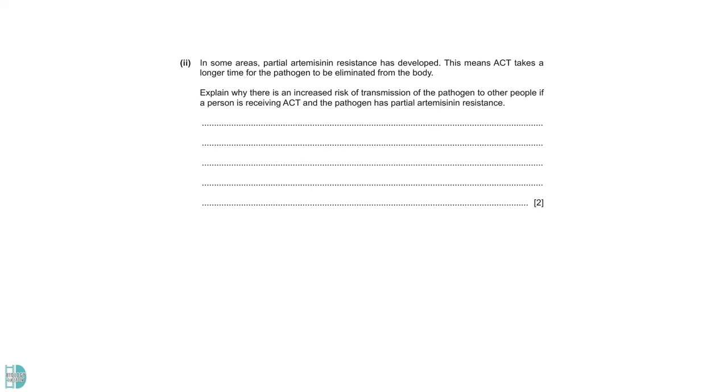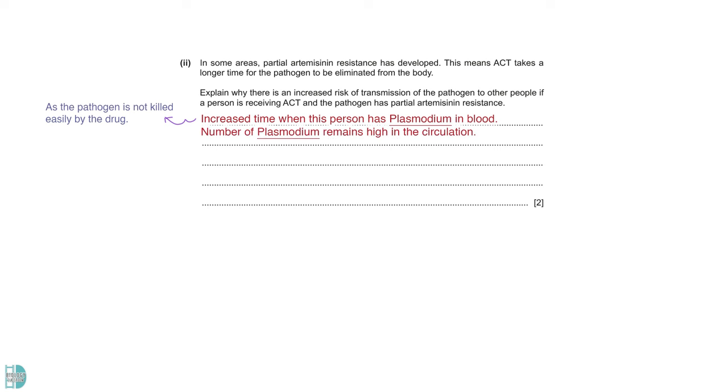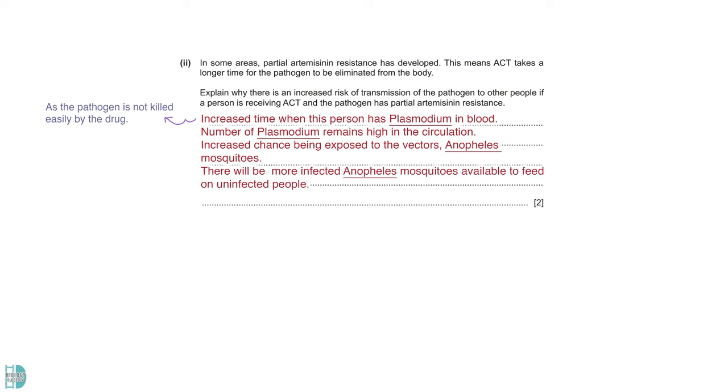Question 2 wants you to explain why there is an increased risk of transmission of the pathogen to other people if a person is receiving ACT and the pathogen has partial artemisinin resistance. In this case, the pathogen would stay longer in a person's circulation. And the poorer response to treatment means that there are a greater number of plasmodium in the person's blood. So, there is a higher chance for this person to be exposed to the vector, which is the anopheles mosquitoes, more infected anopheles mosquitoes would be available to feed on uninfected people.